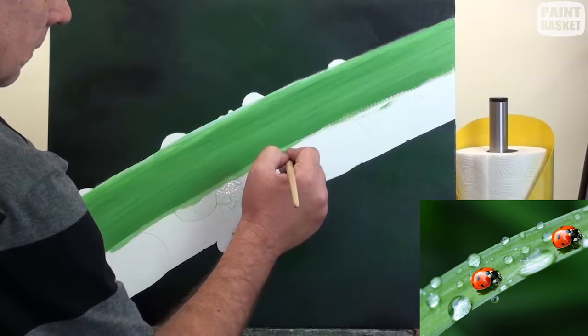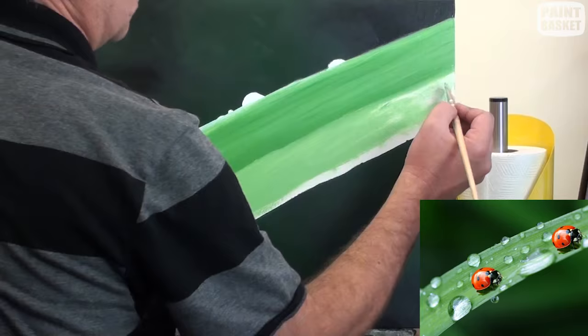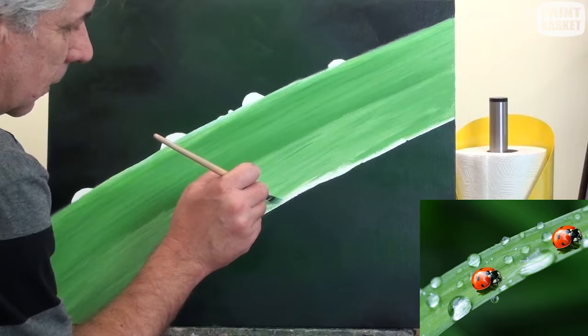Now do exactly the same thing on the bottom half of the leaf, except this time your base color must be lighter to show that the sun is shining more on that half of the leaf. You can use the same colors for the stripes though.